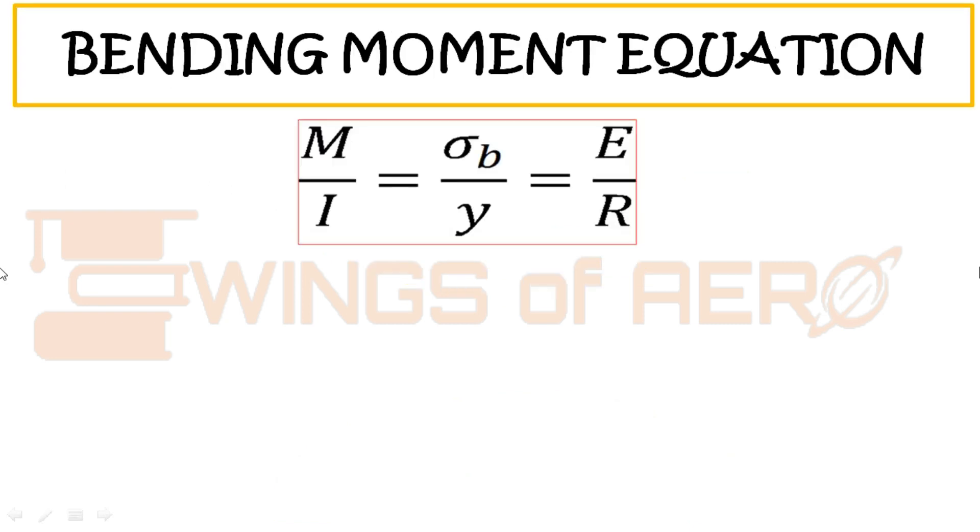Here comes the bending moment equation: M by I equals sigma B by Y equals E by R. M represents a bending moment where I represents the second moment of area or second moment of inertia. Both are the same. Sigma represents bending stress and Y represents the displacement when the load is applied on a beam.